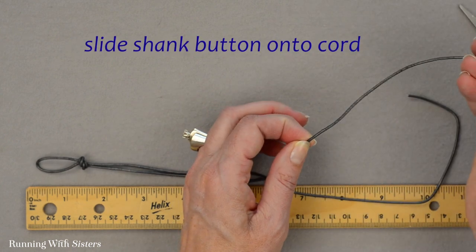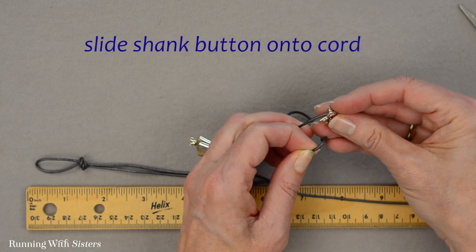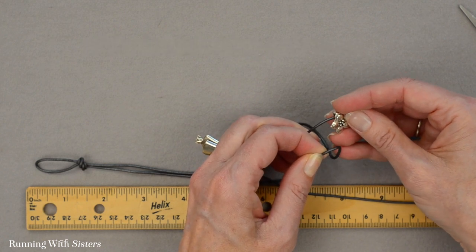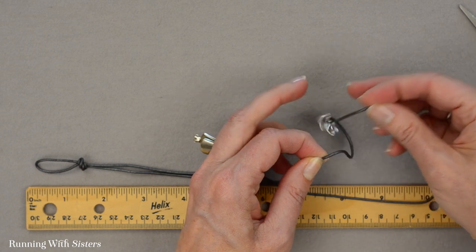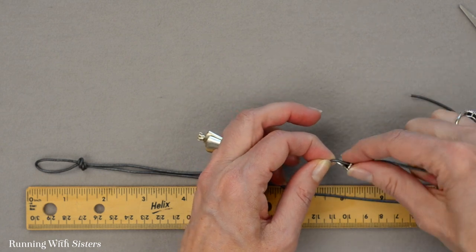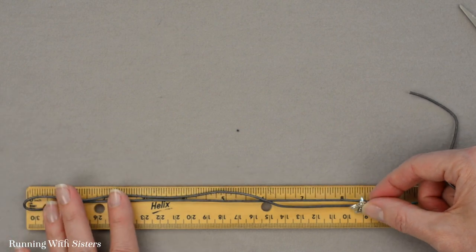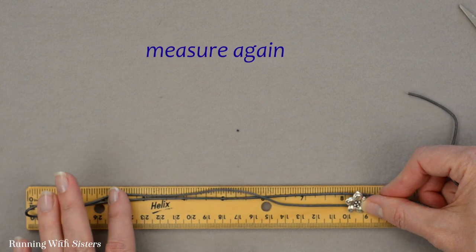And I'm going to slide my button onto that part of my cord. You just need to slide on one side of the cord; you can leave the other cord just as it is. So I want to make sure I've got that in the right spot, so that's going to eight and a quarter inches.